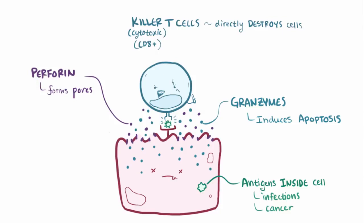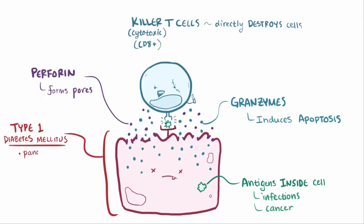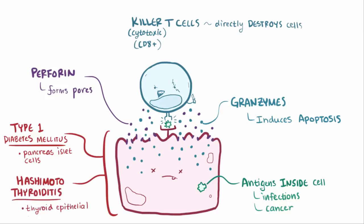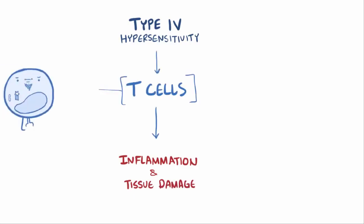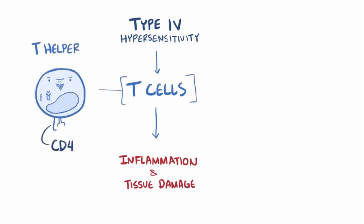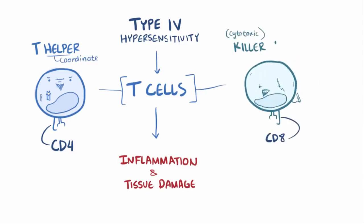Diseases where this cytotoxic mechanism is involved include tissue destruction in type 1 diabetes mellitus, where CD8-positive T cells attack pancreas islet cells, as well as Hashimoto's thyroiditis, where CD8-positive T cells attack thyroid epithelial cells. To recap, type IV hypersensitivity leads to inflammation and tissue damage via T cells, which can be either CD4-positive T helper cells — which help coordinate the attack — or CD8-positive killer or cytotoxic T cells, which directly do the attacking.